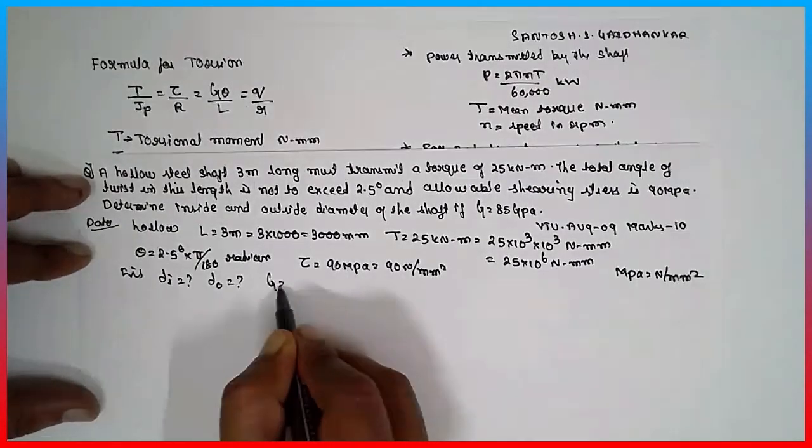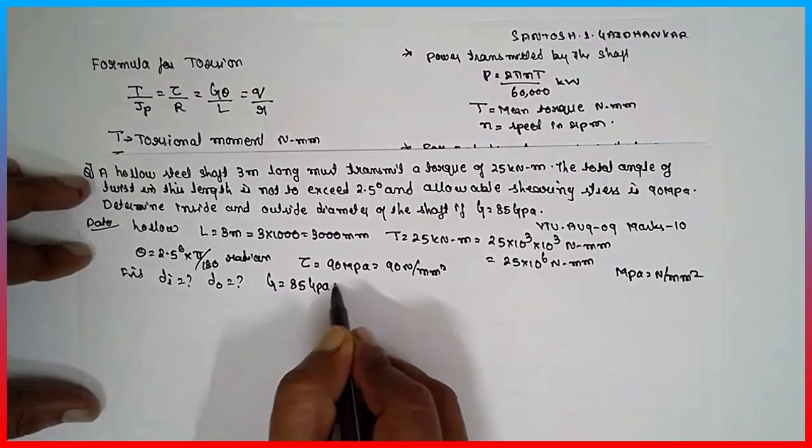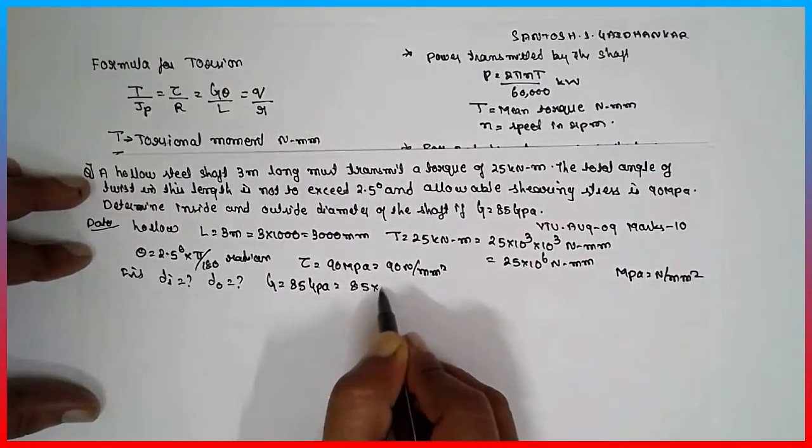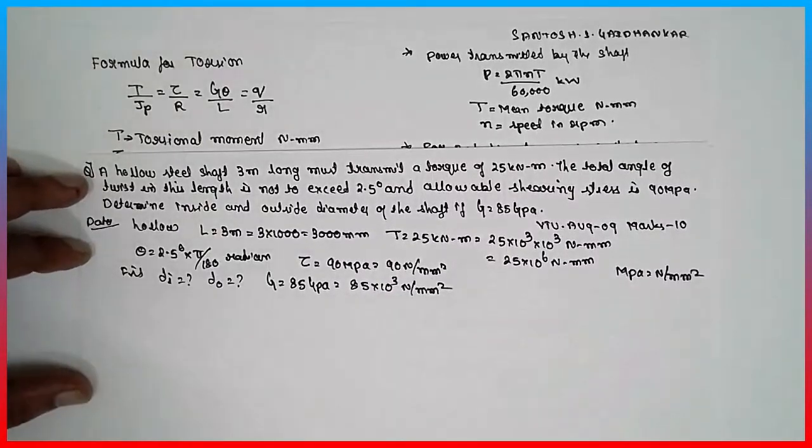G is equal to 85 GPa, that means 85 into 10 raise to 3 Newton per mm square.